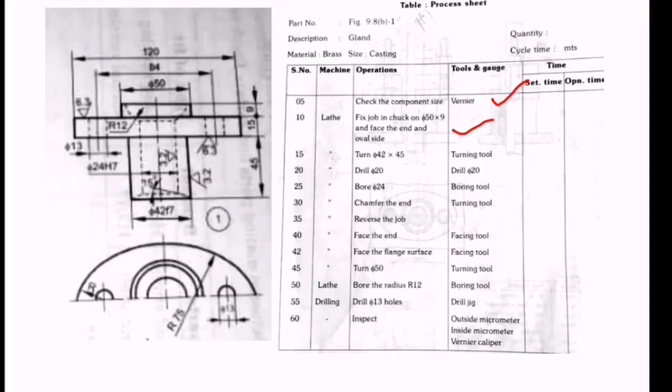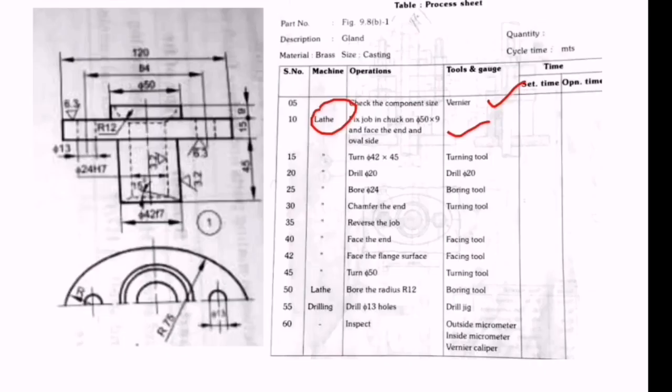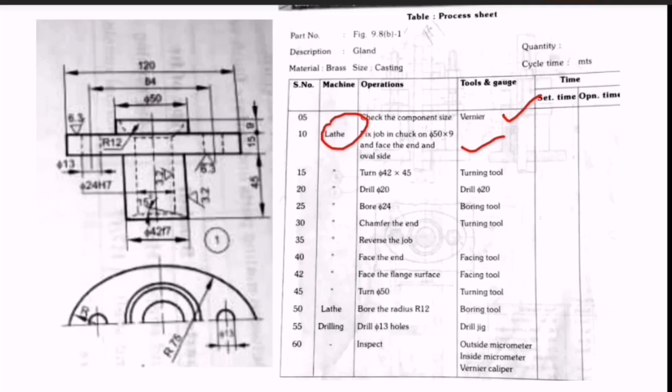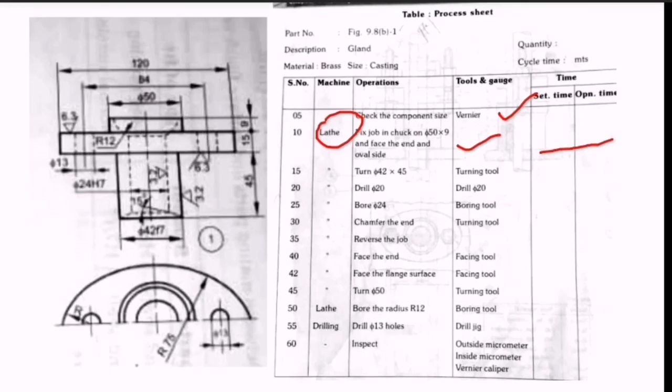The second operation is to fix the job in the chuck, 50 diameter by 9, in the lathe machine and face the end and oval side. The machine used is a lathe. This is the 50 diameter and this is 9. We do the facing operation on that 50 by 9 section.